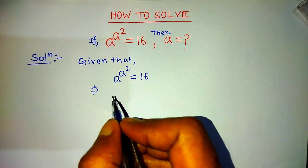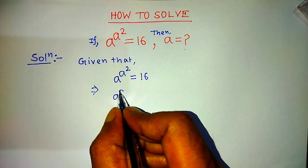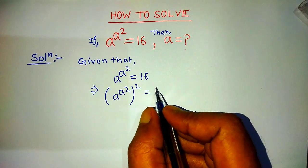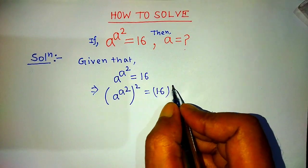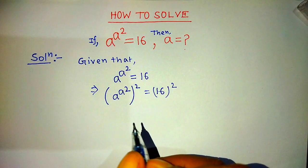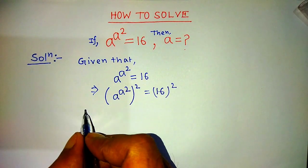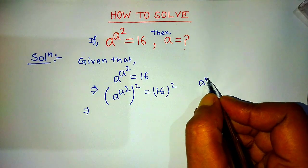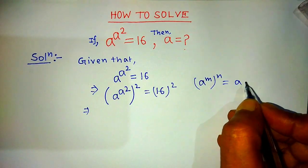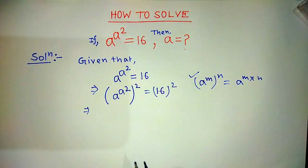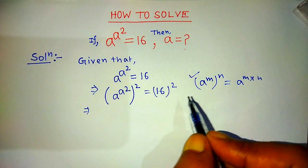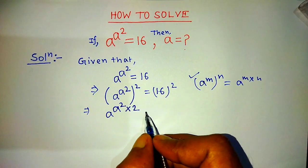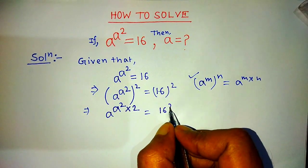On the left hand side, we have to write a raised to the power a to the power 2, whole to the power 2, is equal to on the right hand side, 16 to the power 2. To simplify both sides, we apply the formula: a to the power m, whole to the power n, is equal to a to the power m into n. After applying this formula on both sides, on the left hand side we write a to the power a squared into 2, and on the right hand side, 16 to the power 2.